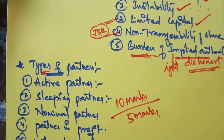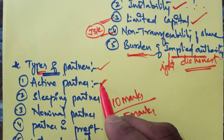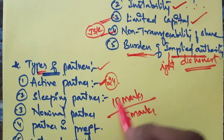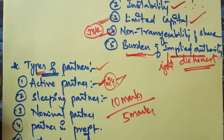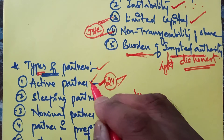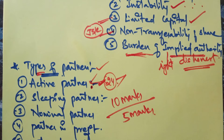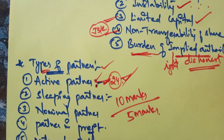Now let us discuss types of partners. The first type is the active partner — a partner who takes part in partnership activities around the clock. He performs various functions and is considered as manager, designer, controller, and organizer, present in every department. Just like other partners, the active partner also contributes capital, invests in the firm, and participates in management, but is always actively available in the firm.